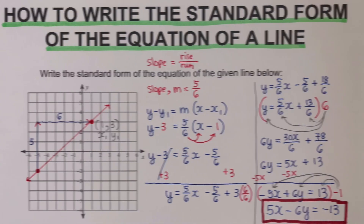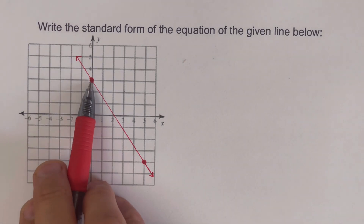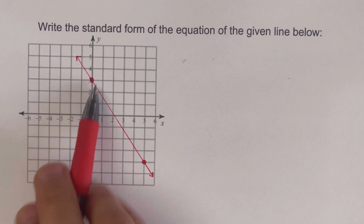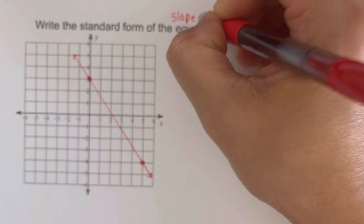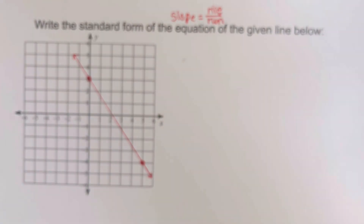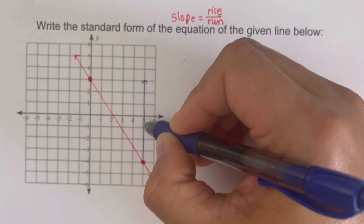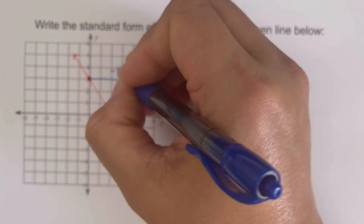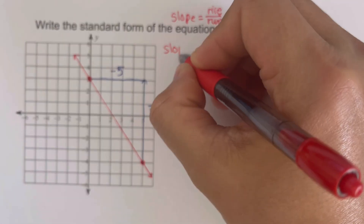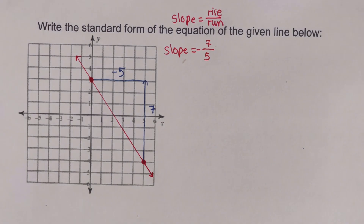Now let's move on to the next example. This problem already has its y-intercept visible, so we can write the slope-intercept form directly and convert to standard form. We determine the slope: rise over run. From the first point, we go up 7 units and to the left 5 units, giving a slope of negative 7/5.